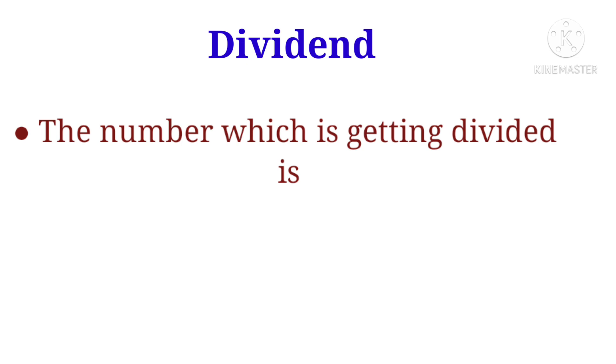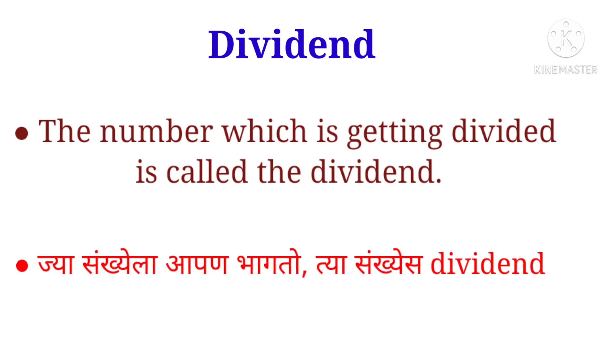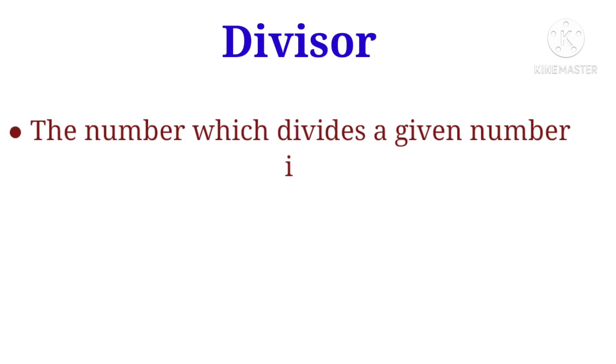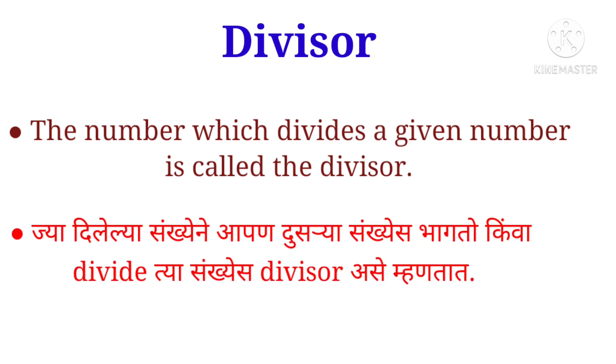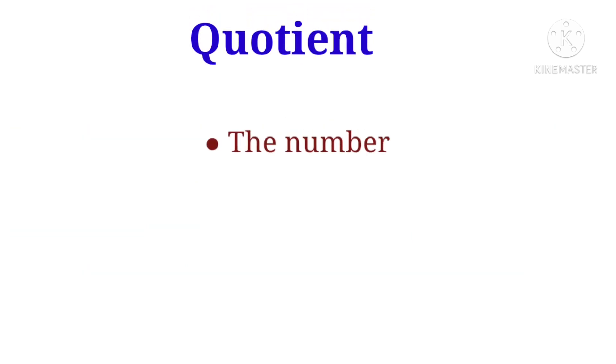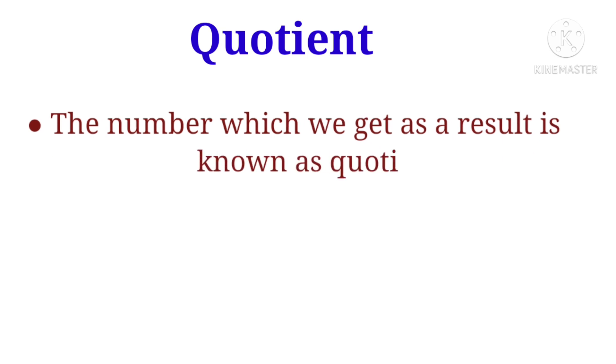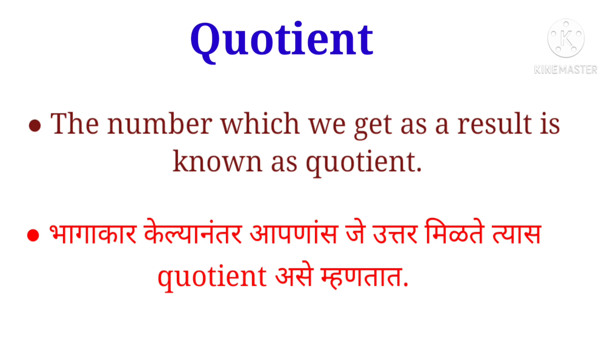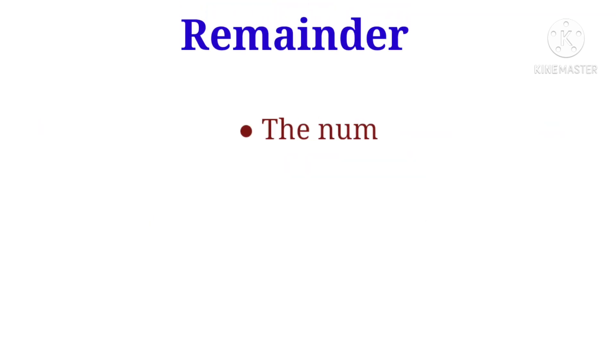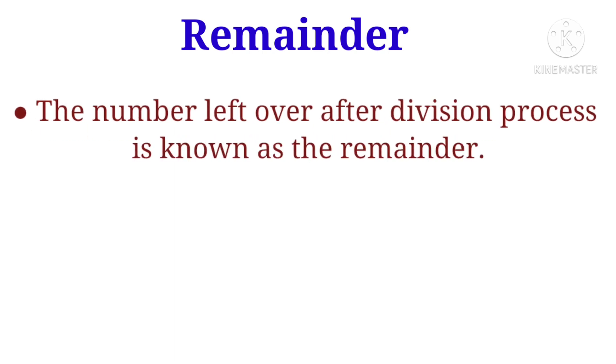Let's start from dividend. The number which is getting divided is called the dividend. Divisor: The number which divides a given number is called divisor. The number which we get as a result is known as quotient. The number left over after division process is known as remainder.